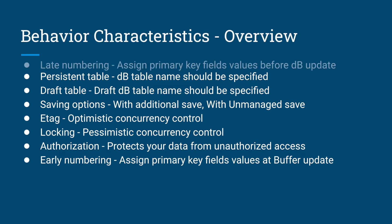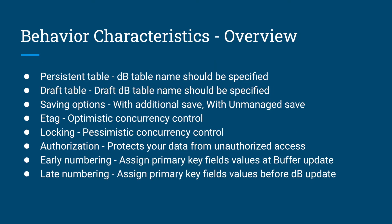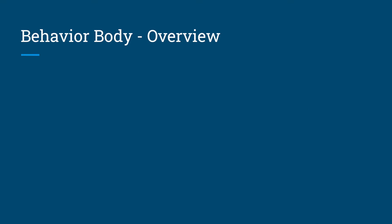Early numbering and late numbering are both about assigning primary key values. In early numbering, the primary key fields are assigned at the time of the transactional buffer itself. In late numbering, the primary key values are assigned at the time of commit, just before saving the data into the database table. Late numbering is very helpful when you want to use number ranges and avoid gaps in numbering.